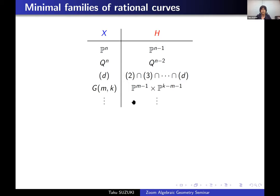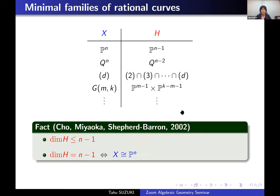In this way, for a Fano manifold X, we have another variety H as the minimal family of rational curves. In general, the dimension of H is smaller than the dimension of X, and it is equal to N−1 if and only if X is isomorphic to a projective space. This fact is obtained by Cho, Miyaoka, and Shepherd-Barron's characterizations of projective spaces.